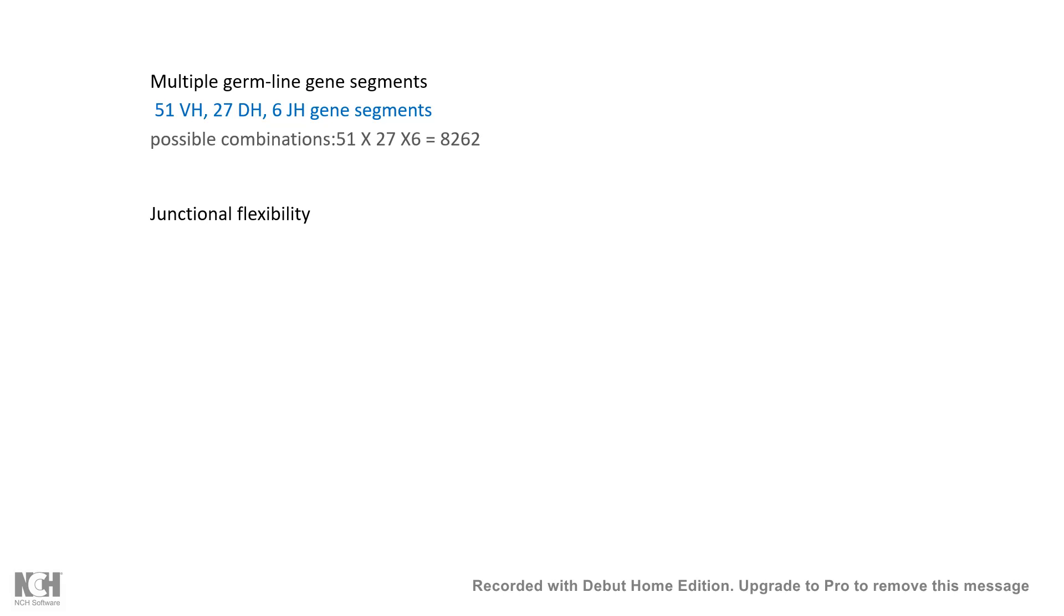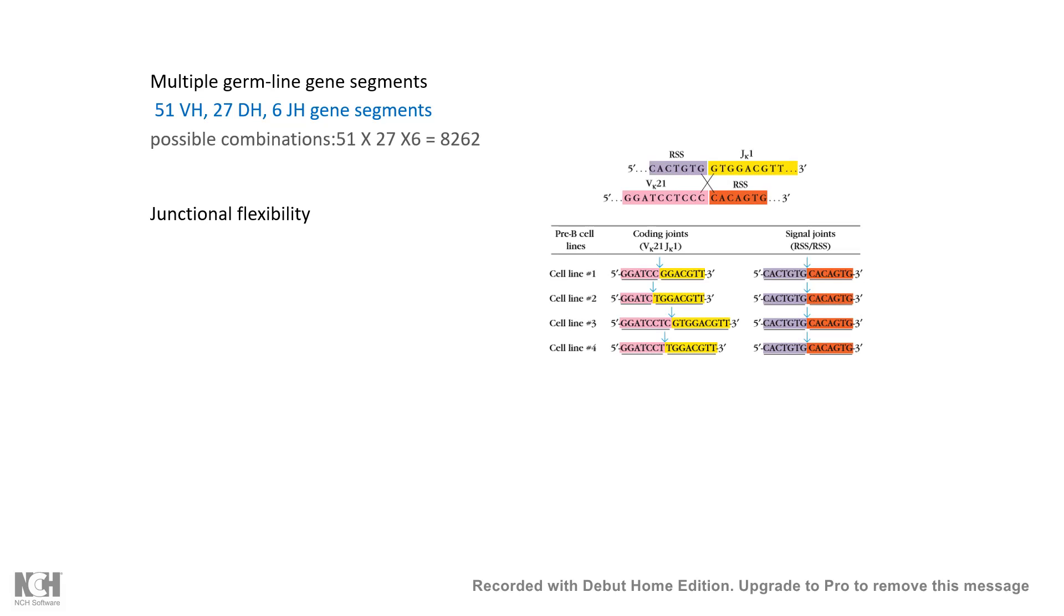Additionally, there's junctional flexibility—when segments join after double-stranded breaks, there's flexibility in the joining process. New nucleotides can be added at junctions, accounting for diversity. After all this, somatic hypermutation creates even more diverse antibodies.